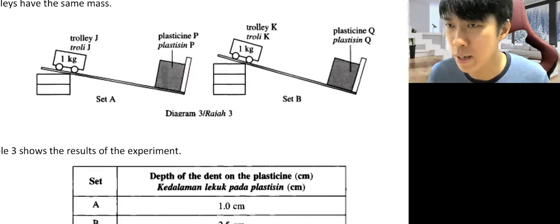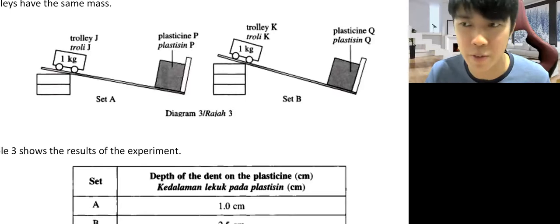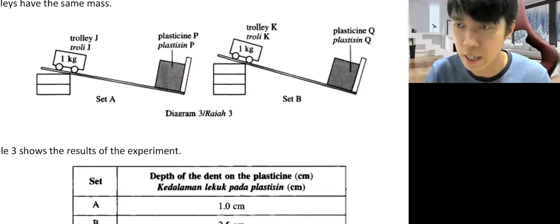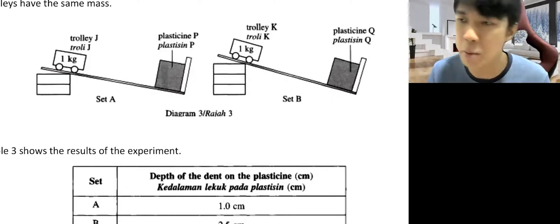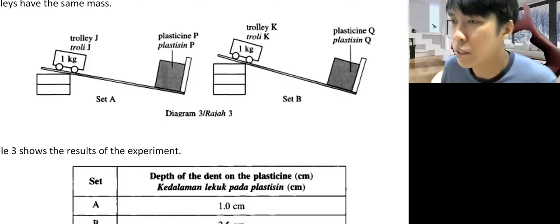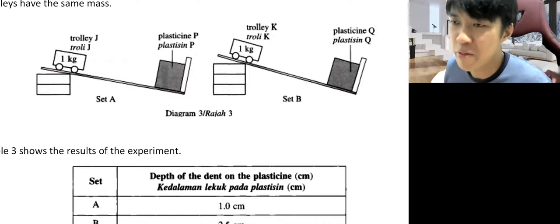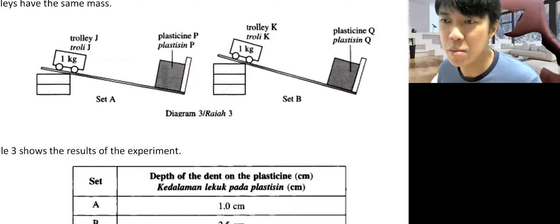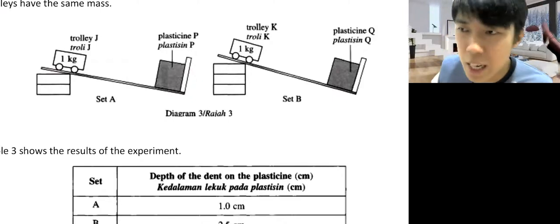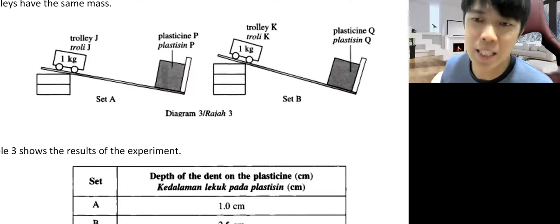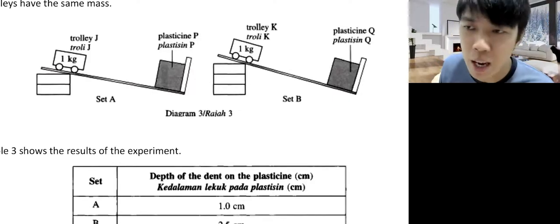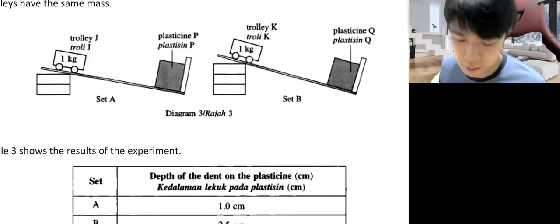My example: 'The dent formed on block of plasticine Q is deeper.' That's your observation. Then the reason: 'Trolley K is moving faster, which produces a bigger momentum.' I'm pretty sure our sentences won't be exactly the same, but that's fine — as long as you address the main points.